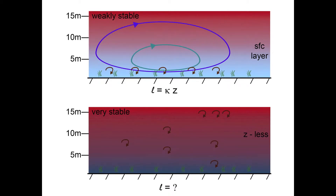For the weakly stratified case, the influence of the ground surface is generally formulated as being proportional to a mixing length which is parameterized as increasing linearly with height above ground. That is, L equals kappa Z. The constant of proportionality is kappa, the von Karman constant, approximately equal to 0.4. The mixing length is considered to be proportional to the size of the eddies.